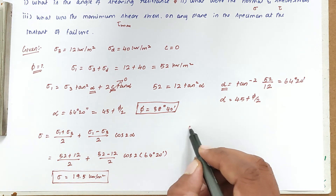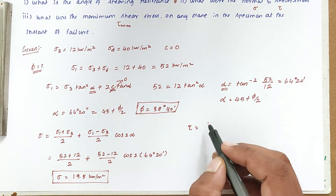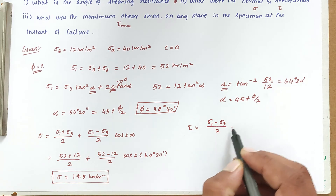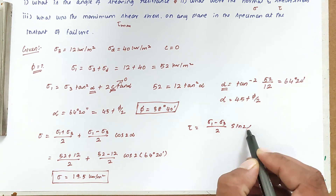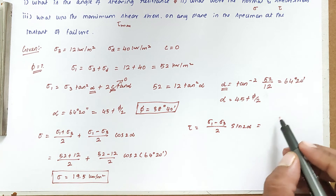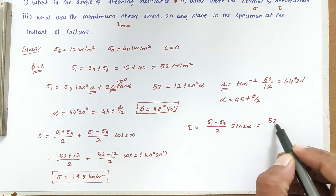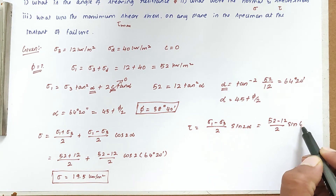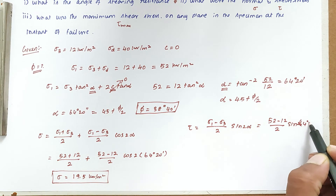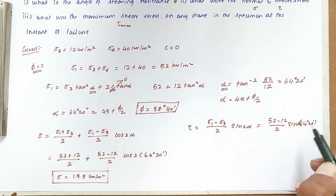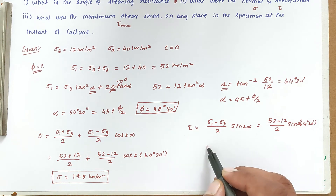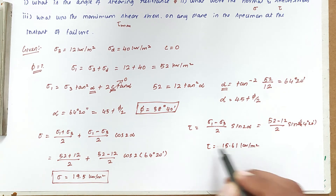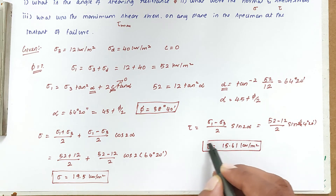Now we find the shear stress τ using the formula: τ = (σ1 − σ3)/2 · sin2α. Substituting: τ = (52 − 12)/2 · sin(2 × 64°20') = 15.61 kN/m². This is the second answer.